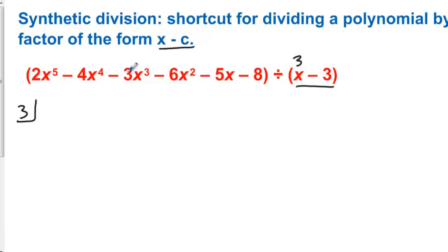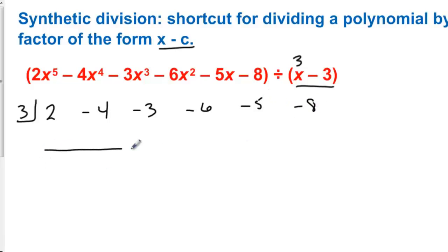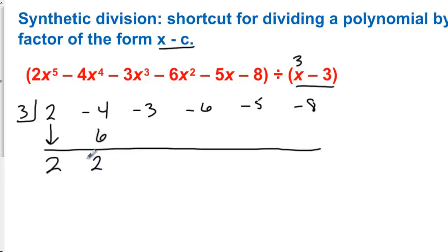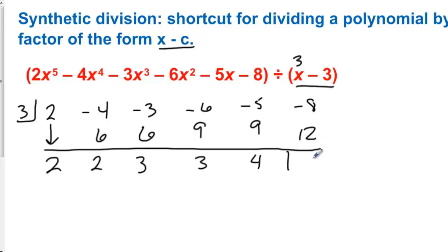We write the coefficients starting with the highest power, representing every power — powers 5, 4, 3, 2, 1, 0. None of these powers are missing, so we don't need to write any zeros. So we have negative 6, negative 5, and then negative 8. Then you write a line, leaving room underneath. The first step is to bring down the first number. Everything after that is multiply and add. We take 3 times 2 is 6 and add; negative 4 plus 6 is 2. Then multiply again: 3 times 2 is 6, and we add to get 3. 3 times 3 is 9, and we get 3. 3 times 3 is 9 again, and here we get 4. 3 times 4 is 12, and when we add, we get 4.